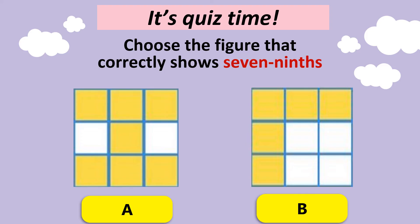On to the next question. We have to choose the figure that correctly shows seven ninths. Ninth means the figure is divided into nine equal parts, which A and B are. So now we only have to look at seven colored parts. Which one has seven colored parts? It's A. A has seven colored parts. B is one, two, three, four, five. Five ninths.